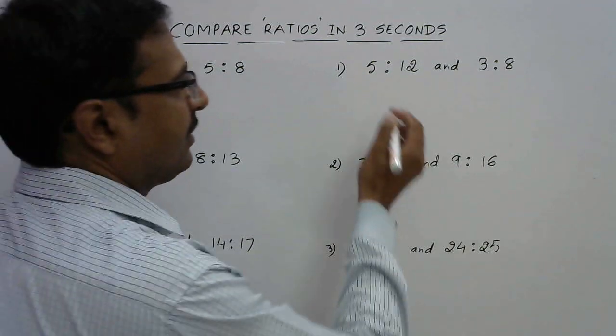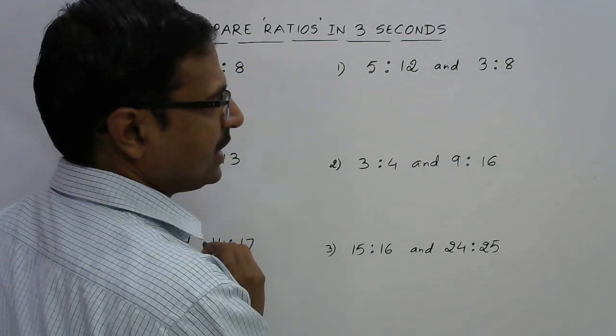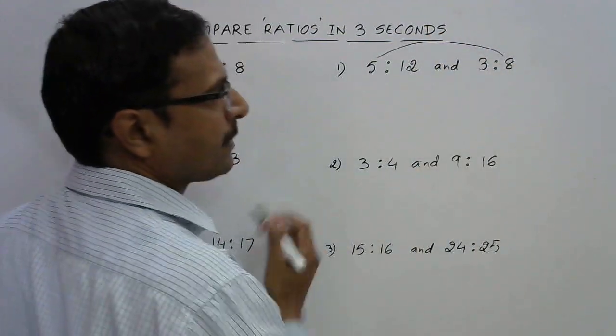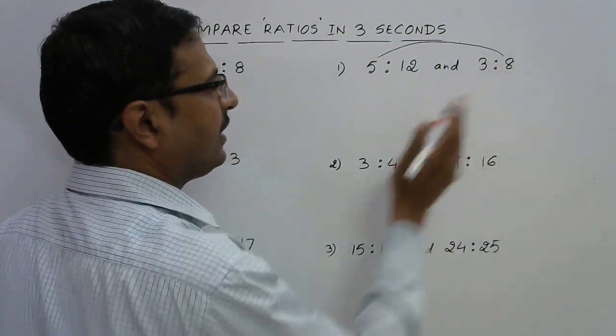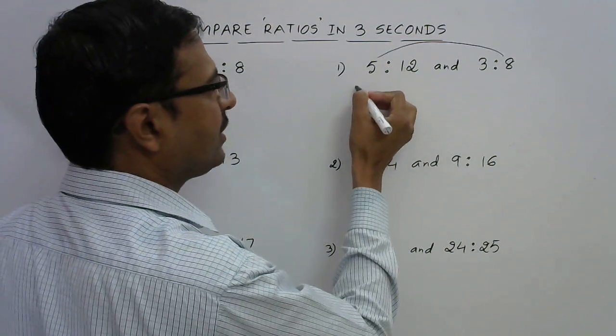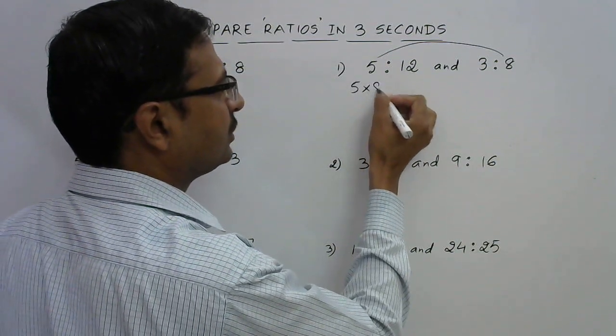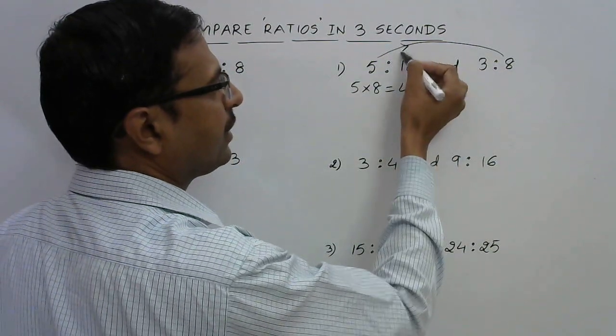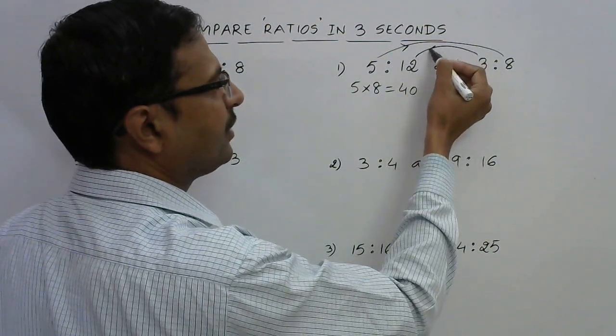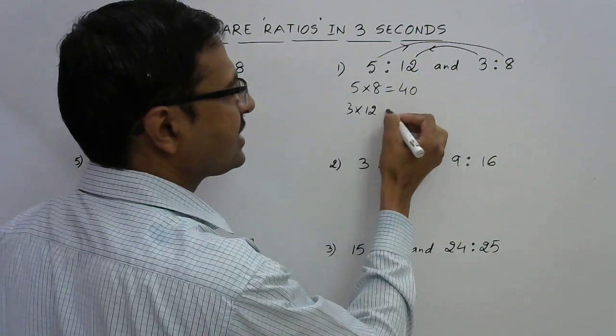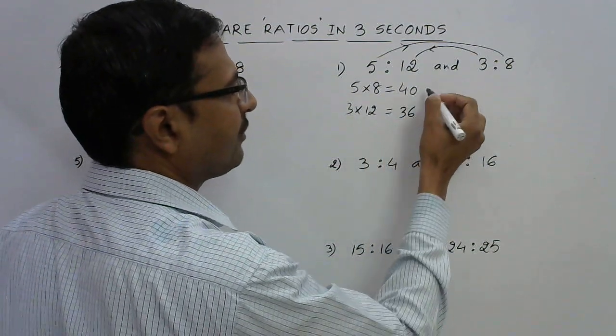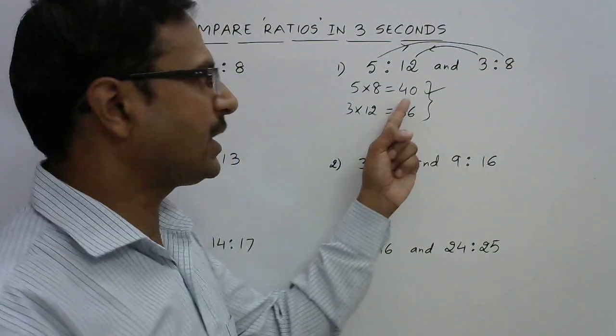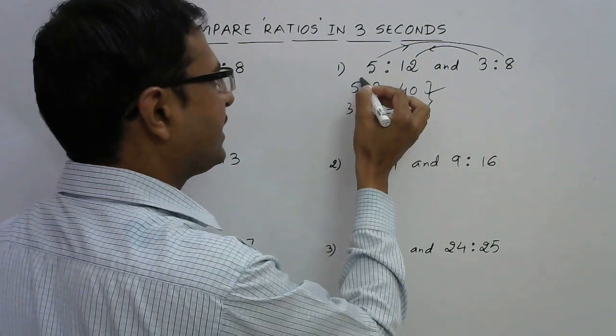The first one: 5 ratio 12 and 3 ratio 8. Just multiply the extremities, so that is 5 and 8. 5 into 8 will give you 40, and multiply 3 by 12, so 3 into 12 will give you 36. Now which of the two is greater? 40 is greater.